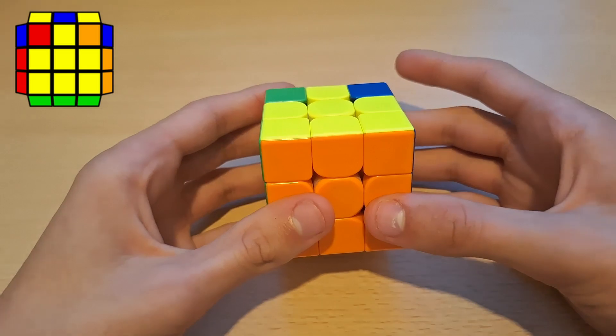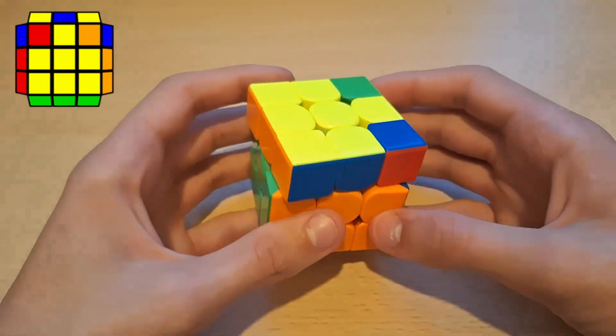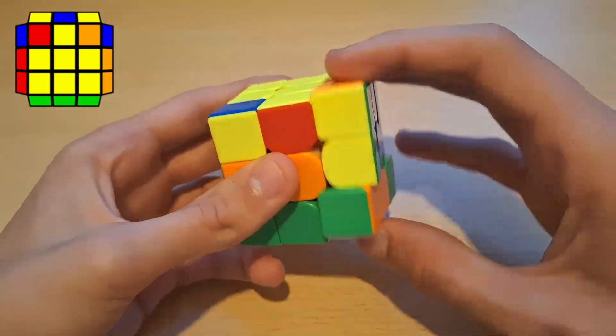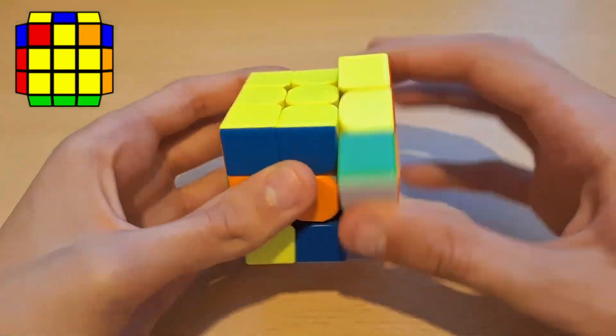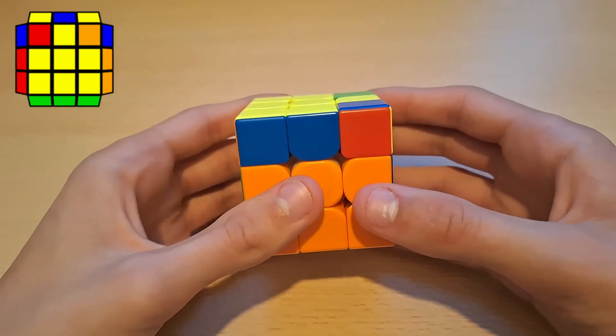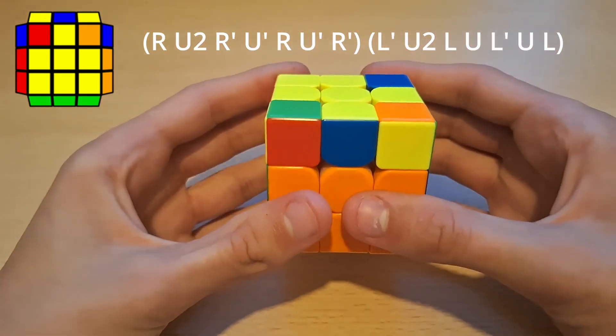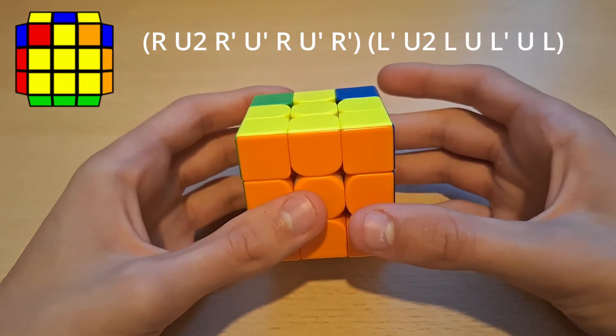So this is the first case, so this was the one I used as an example before. So how I recognize this is pretty much everything is solved except for two twisted corners. Now we actually don't twist these corners like this because that's slow. And what we do instead is from this angle we just do an anti-sune and then into a lefty anti-sune and that solves the cube. And now faster.